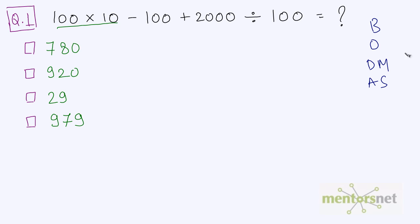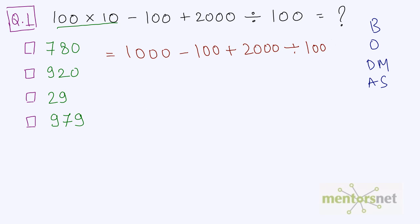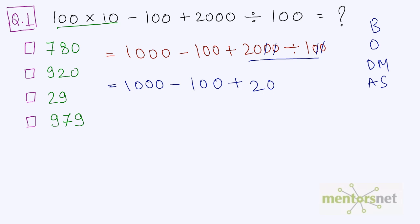So this equals 100 times 10, which is 1000, minus 100, plus 2000 divided by 100. Now division is the highest priority operation remaining. We can cancel out two zeros, giving 1000 minus 100 plus 20. Again we have operations with the same priority, so we solve the left one first.